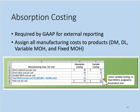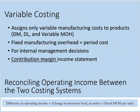Under variable costing, the fixed manufacturing overhead component is considered a period cost and not a product cost. That drops the cost of the product down to $50. Variable costing only assigns variable manufacturing costs — direct materials, direct labor, and variable manufacturing overhead — to the product. Fixed manufacturing overhead is treated as a period cost.